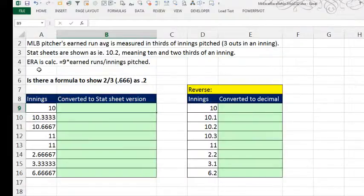It's baseball season here in the United States. In fact, I'm taking my nephew to the baseball game tonight. Major League Baseball, the pitcher's earned run average is measured in thirds of an innings because there's three outs in an inning. But the stats sheets show it as 10.2, meaning 10 and two-thirds of an inning. Is there a formula to show two-thirds as 0.2?